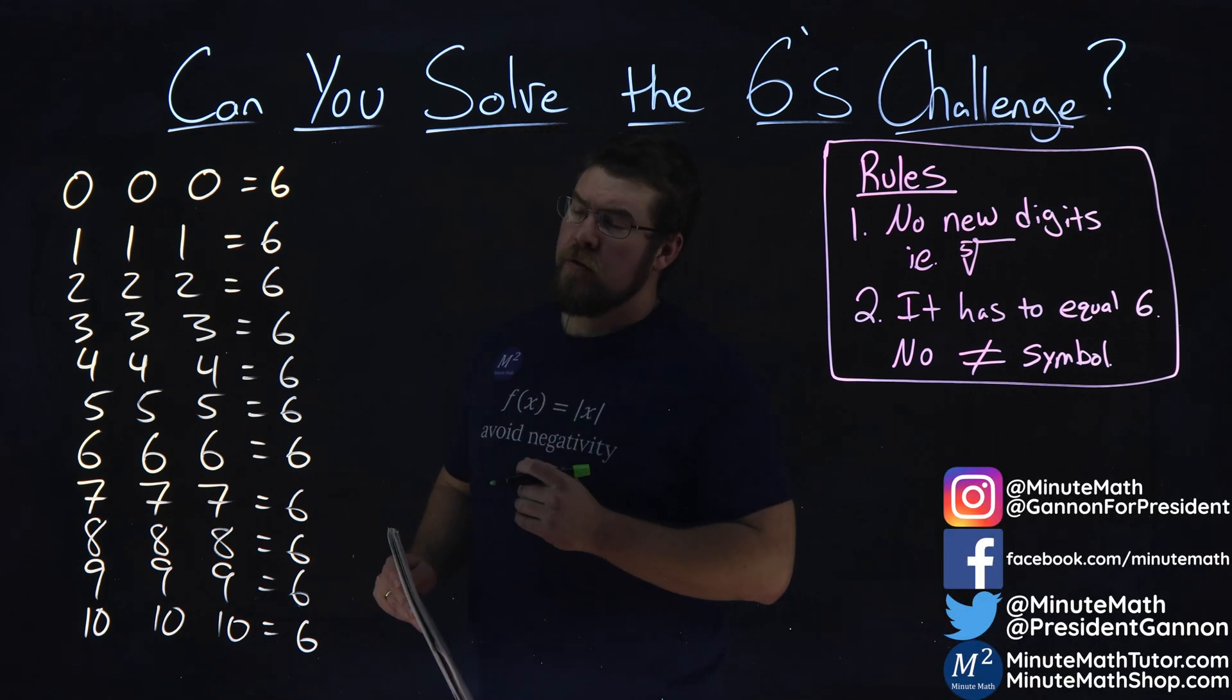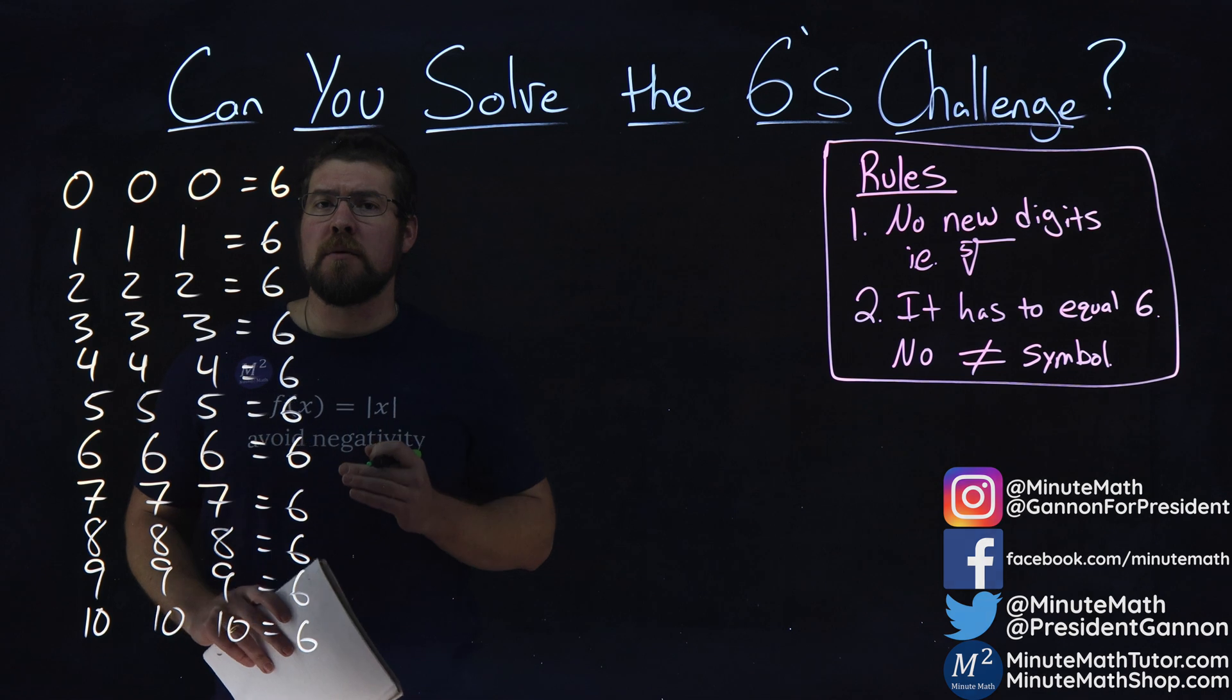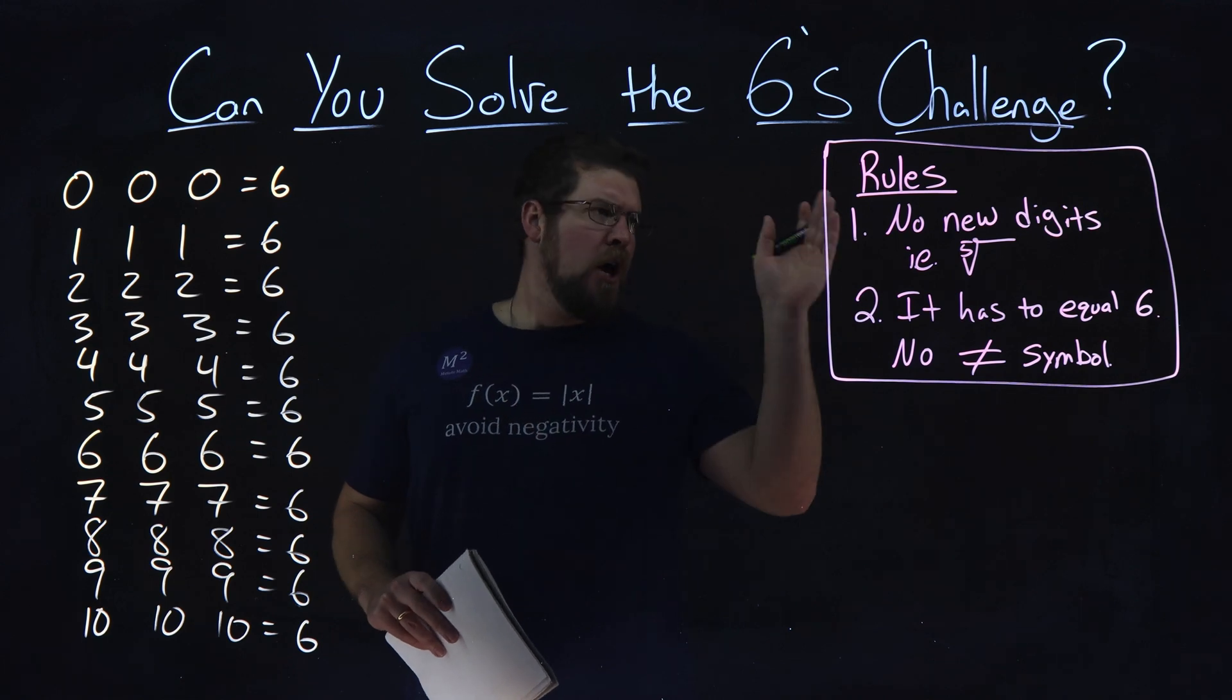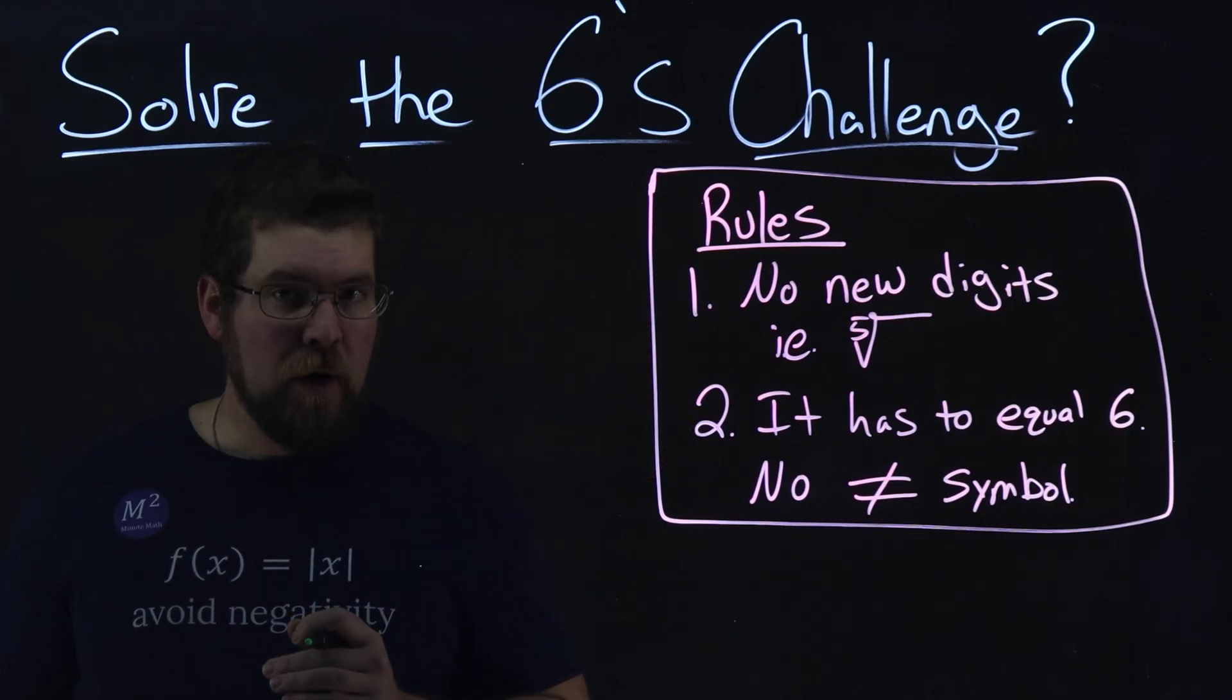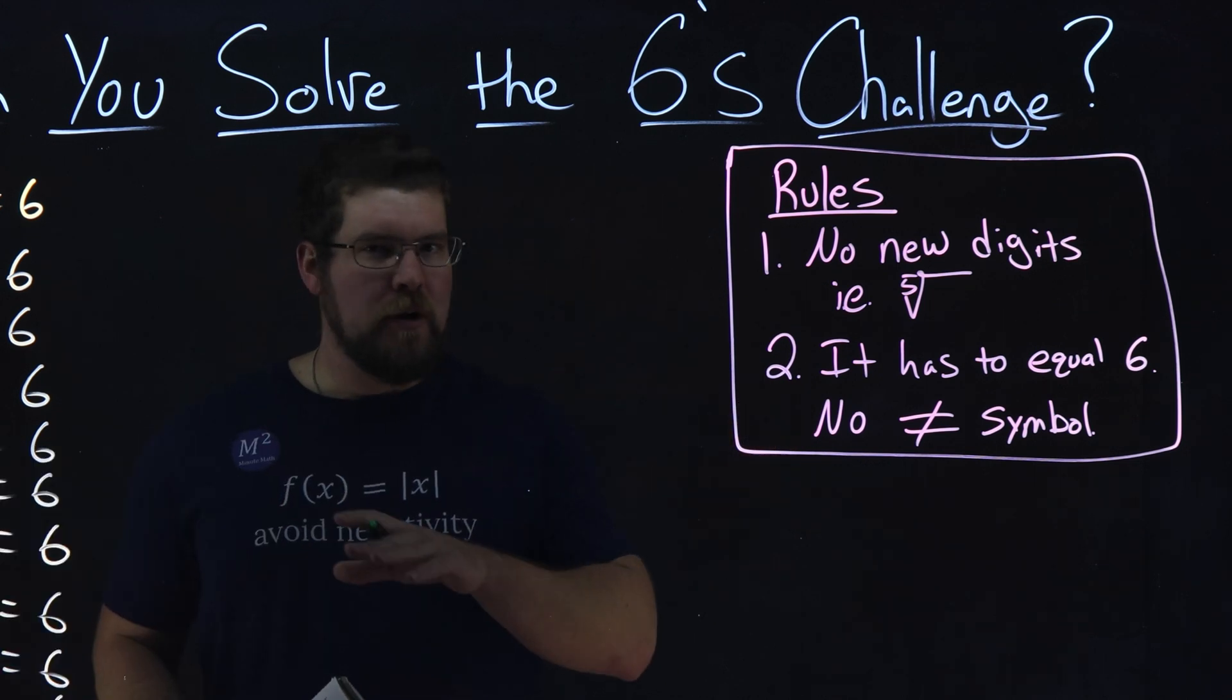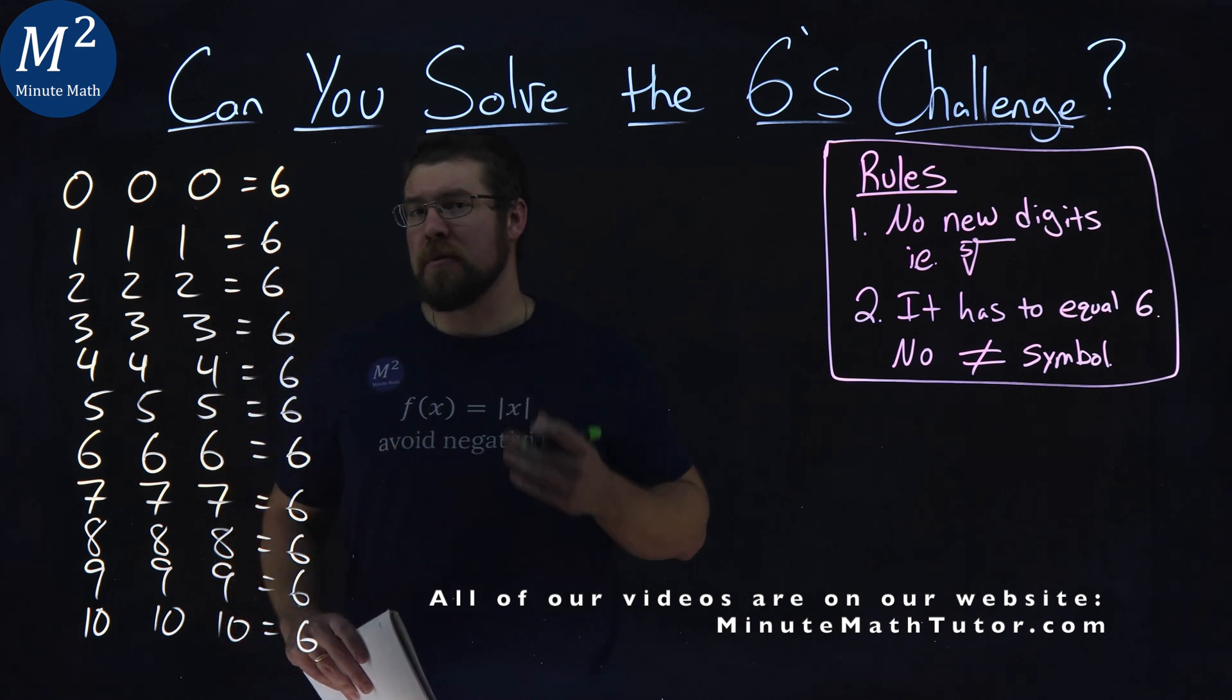We're given these numbers right here, zero through ten, and they're repeated three times each one, and they all will equal six. We can use any mathematical operation out there, but there are a few rules. We can't create any new digits, so fifth root will not work here because we have to put the five in there. That's one of the rules. Second, you can't be cheeky and say not equal. It has to equal six, but we can use any other operation and try to manipulate these numbers to equal six.